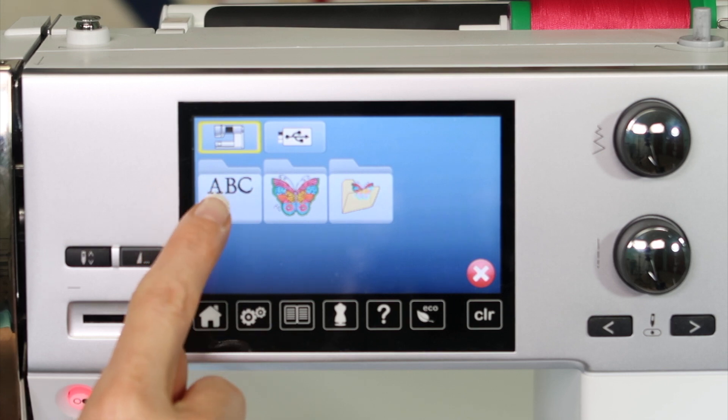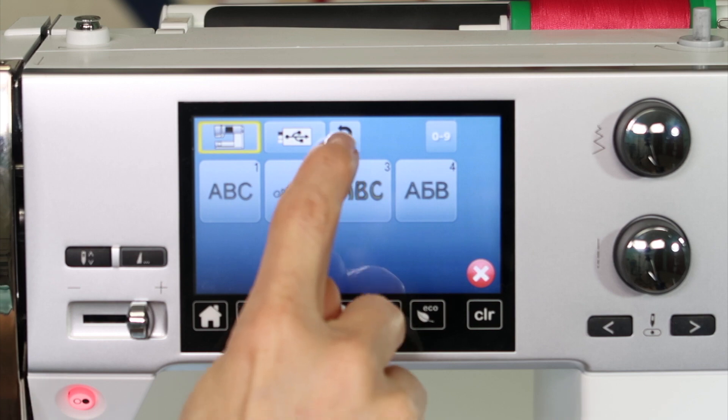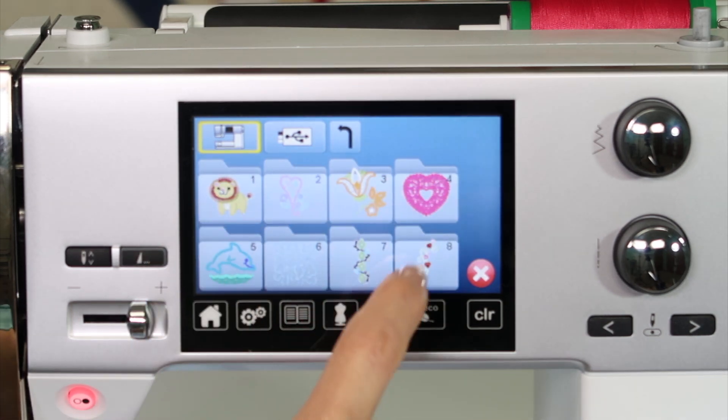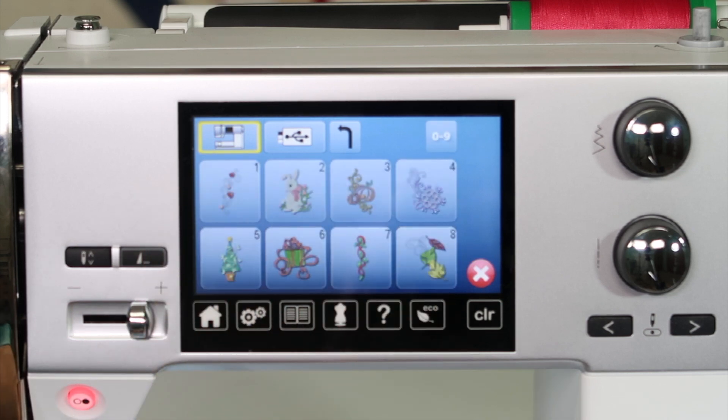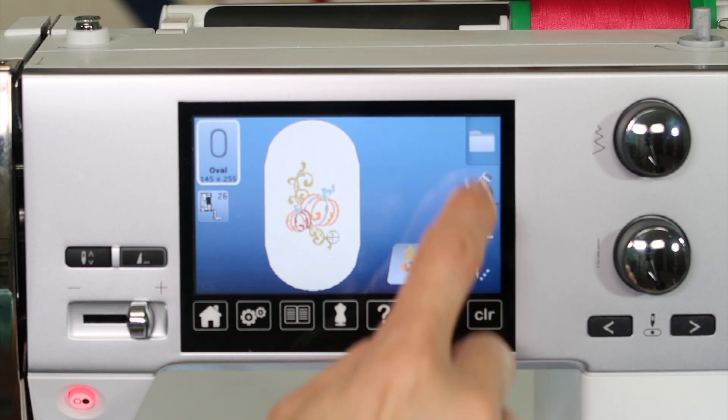Then you have alphabets. Anytime you get into something and you want to get out of it, you can use the arrow pointing up and out. If you have built-in designs, there's lots of designs in each of these folders. Whatever you touch, you can pull right up on the screen.